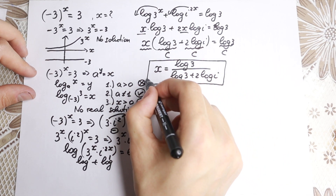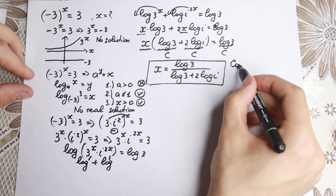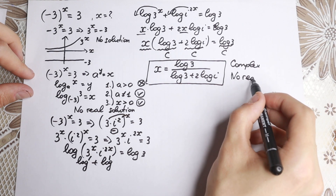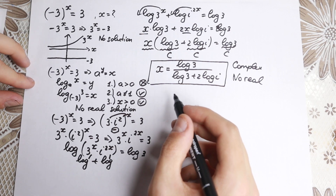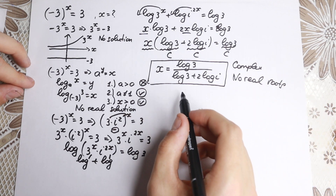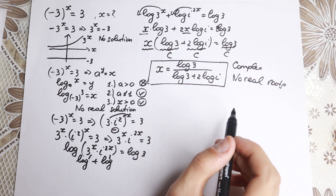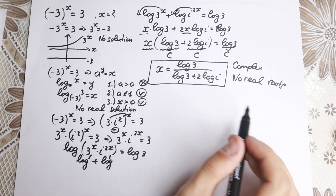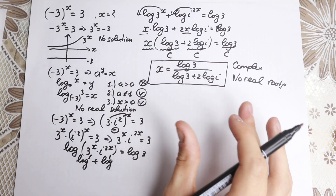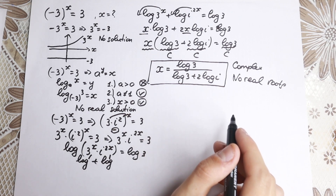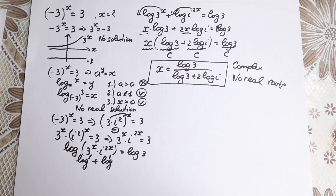This is our answer in terms of complex numbers. So: no real roots — proved both with and without parentheses — and one complex root given by x equals log 3 over (log 3 plus 2 log i). Tricky question, but I hope you enjoyed this video and understand the explanation using complex numbers and logarithm properties. Please support me with a like and a comment — I really appreciate it. Thank you for watching and have a great day. See you in the next videos!